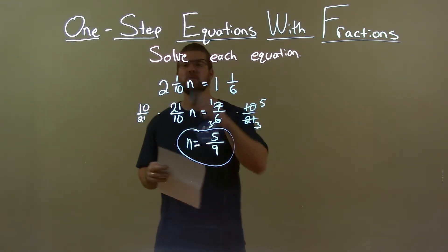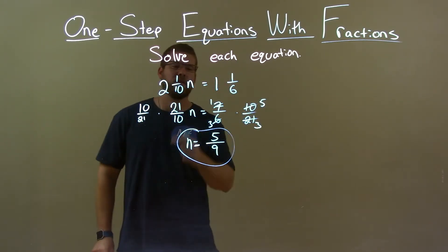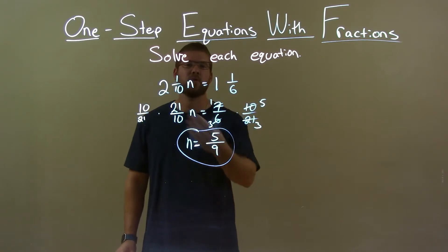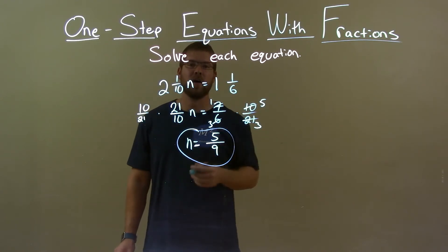Quick recap. We're given 2 and 1 tenth n equals 1 and 1 sixth. And we can solve for n. I converted both of our fractions to improper fractions, then multiplied both sides by the reciprocal. Then, in doing so, simplified and got our final answer of n equals 5 over 9.